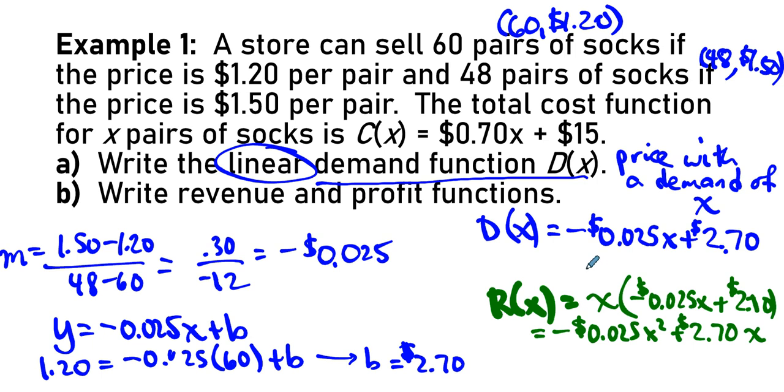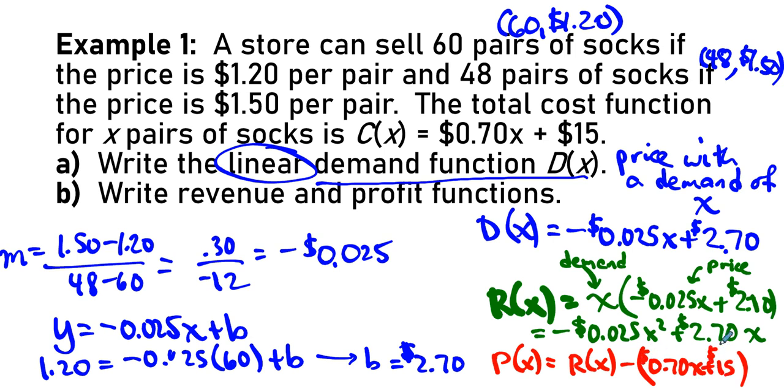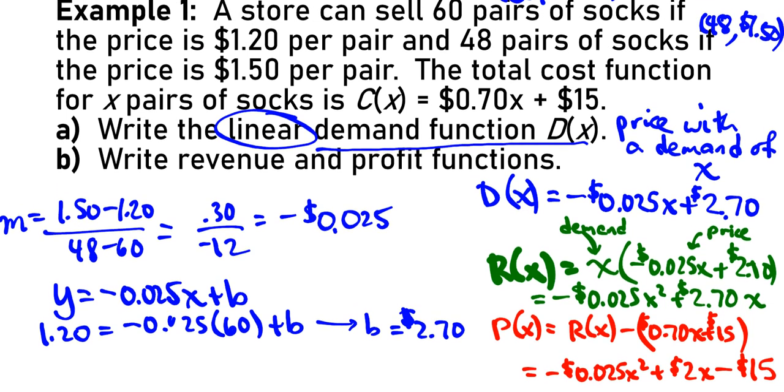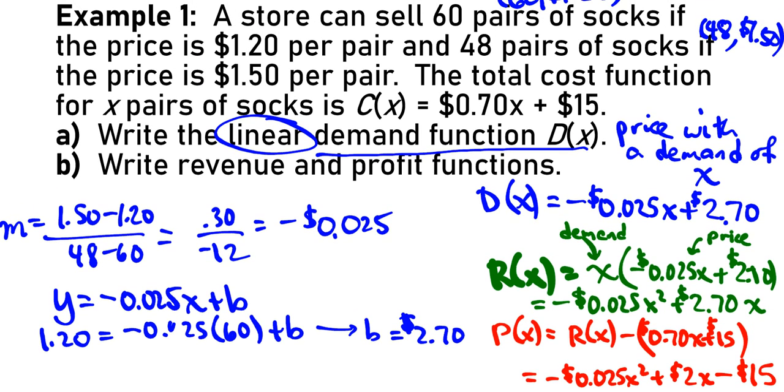The revenue function is negative 0.025 times X squared plus $2.70 times X. Revenue is the number sold times the price for each one. And then profit, what's profit? Profit is revenue minus cost. Profit is revenue minus cost, and that's negative 0.025 X squared dollars. This is a plus $2.70 X. This is a minus $0.70 X. So, that's plus $2 X, and then there is a minus $15.